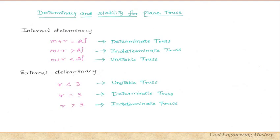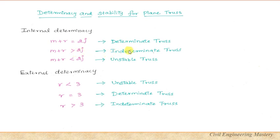Now let's look into the determinacy and stability conditions for a plane truss. For the condition m + r = 2j, the truss is statically determinate. If m + r is greater than 2j, the truss is indeterminate. If m + r is less than 2j, the truss is unstable.